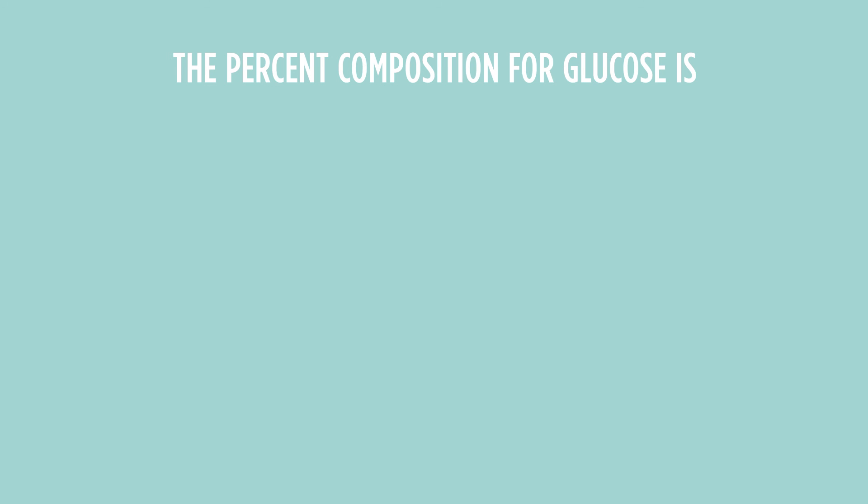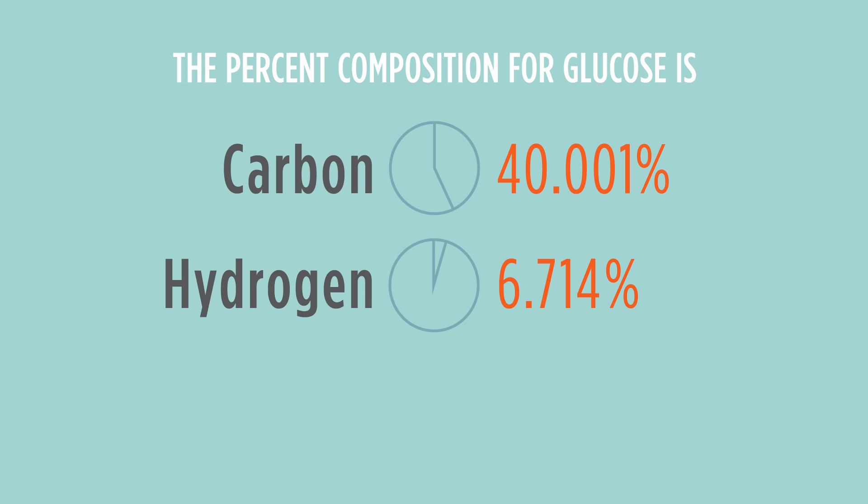Therefore, the percent composition of glucose is 40.001% carbon, 6.7142% hydrogen, and 53.284% oxygen.